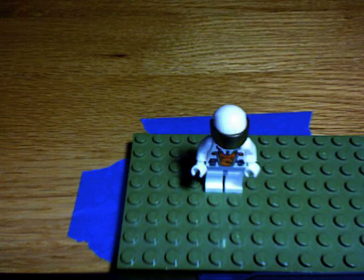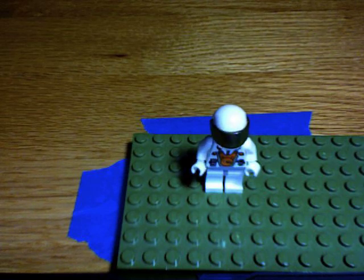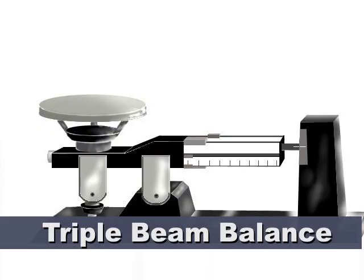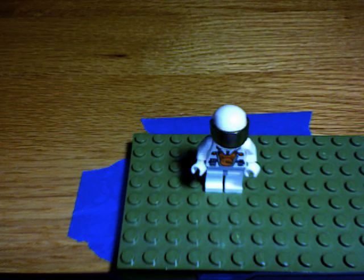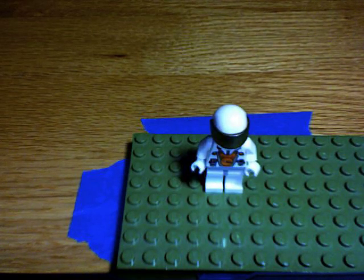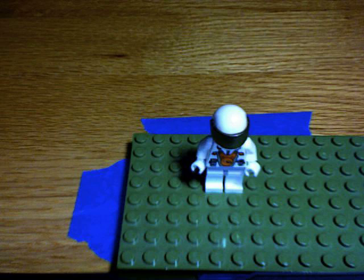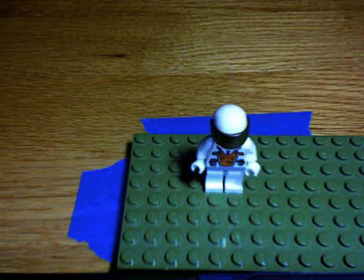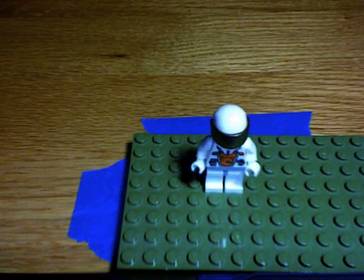To find the mass, use a device to measure mass, such as a triple beam balance. Never find the weight of the object because mass and weight are two different things. Mass is the quantity of matter within an object. Weight is the measurement of the pull of gravity on an object. The difference is that weight is affected by gravity and mass isn't.